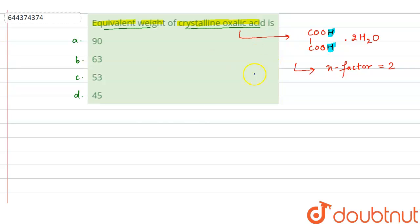Now we have to find out equivalent weight. Equivalent weight is equal to molecular weight divided by N factor. N factor for crystalline oxalic acid is 2. Now we will find out the molecular weight.